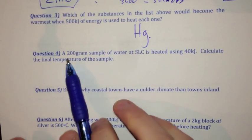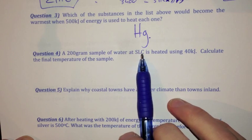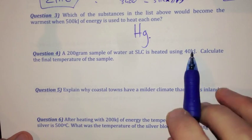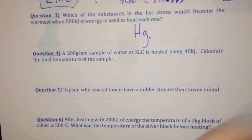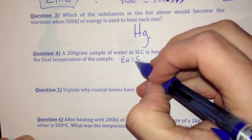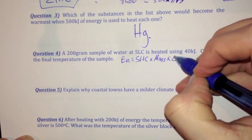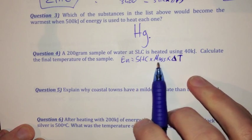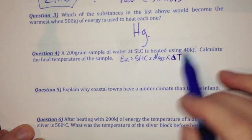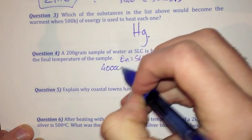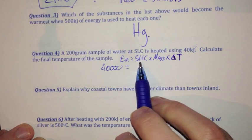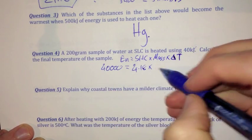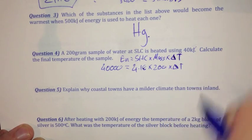Question four: a 200 gram sample of water held at SLC is heated using 40 kilojoules. Calculate the final temperature of the sample. Once again, we've got energy and a change in temperature, so write down the formula. Energy equals SHC times mass times delta T. My energy is 40 kilojoules, which is 40,000 joules. This equals the specific heat capacity of water, 4.18, times 200 grams, times delta T, which we don't know.